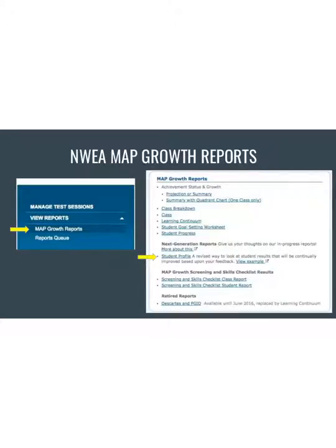The first thing you're going to do is access your growth reports on the NWEA MAP website. On the left-hand side you'll see a yellow arrow pointing to MAP Growth Reports — that should be a window that pops up right away when you log in. If you don't see it, go to View Reports and it should have a drop-down menu that includes MAP Growth Reports.